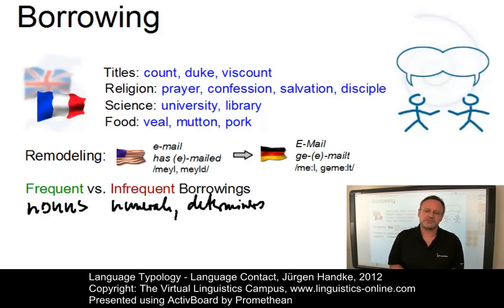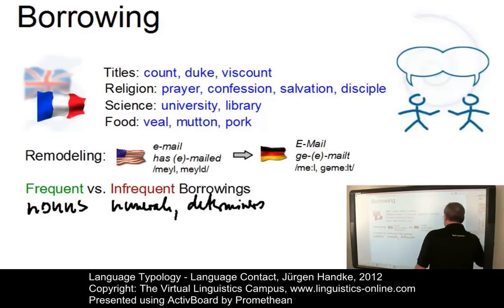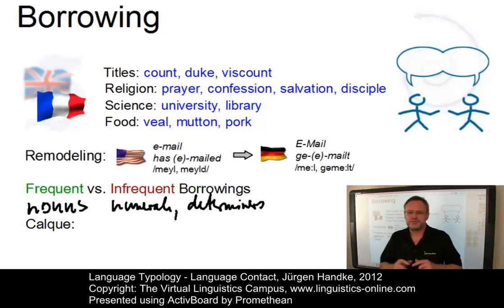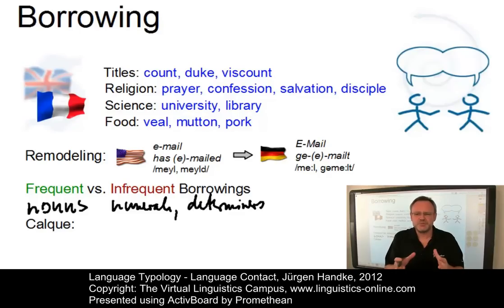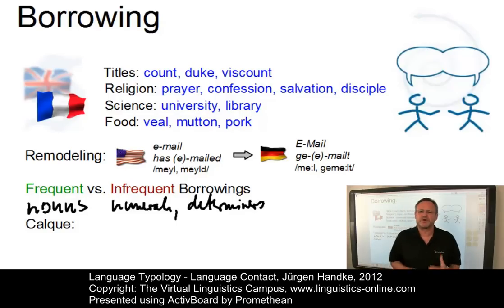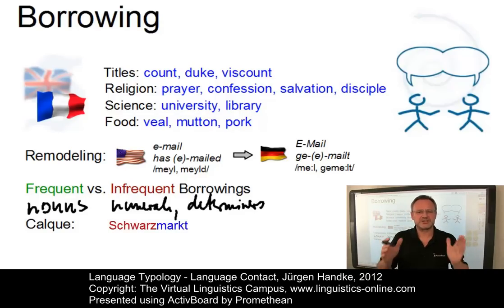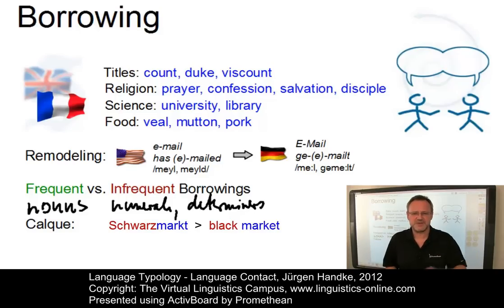Another way of exploiting the resources of the donor language is the so-called calque, also referred to as loan translation or semantic loan. This describes new words or phrases formed by taking a foreign word as a model and translating it morpheme by morpheme. Take the German word Schwarzmarkt, where Schwarz means black and Markt means market, and the result is black market in present-day English.